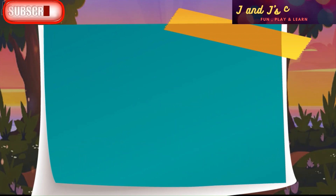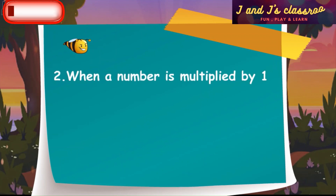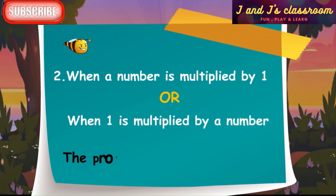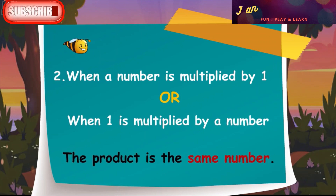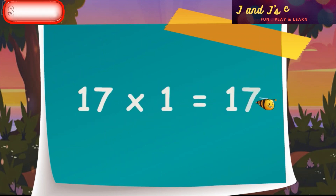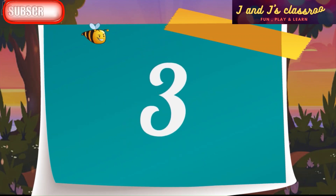Then the 2nd property: when a number is multiplied by 1, or when 1 is multiplied by a number, the product is the same number. For example, when we multiply 17 by 1, then the product is the same number, 17.